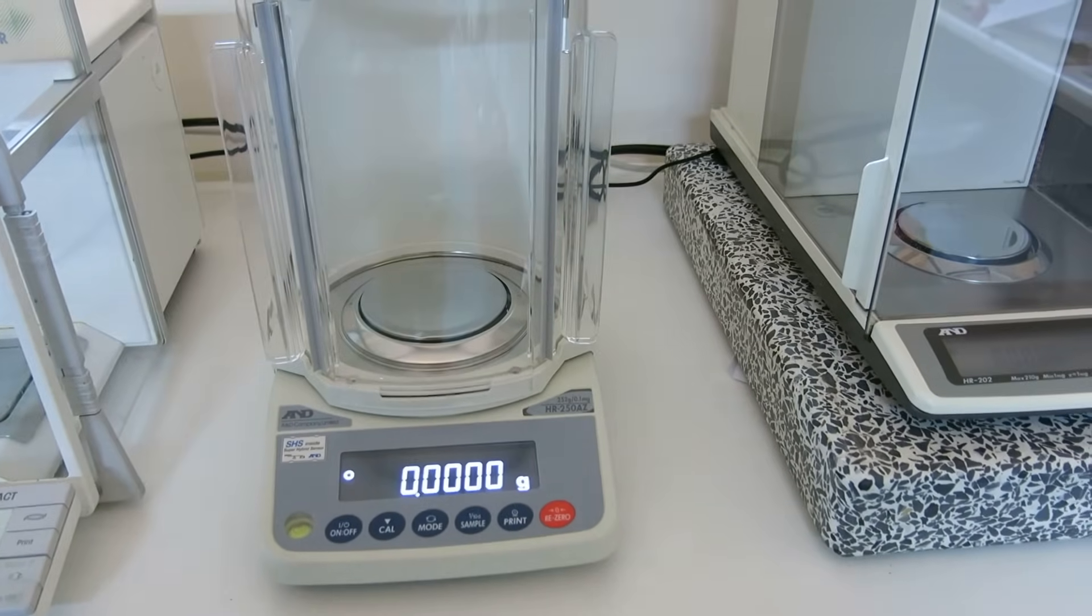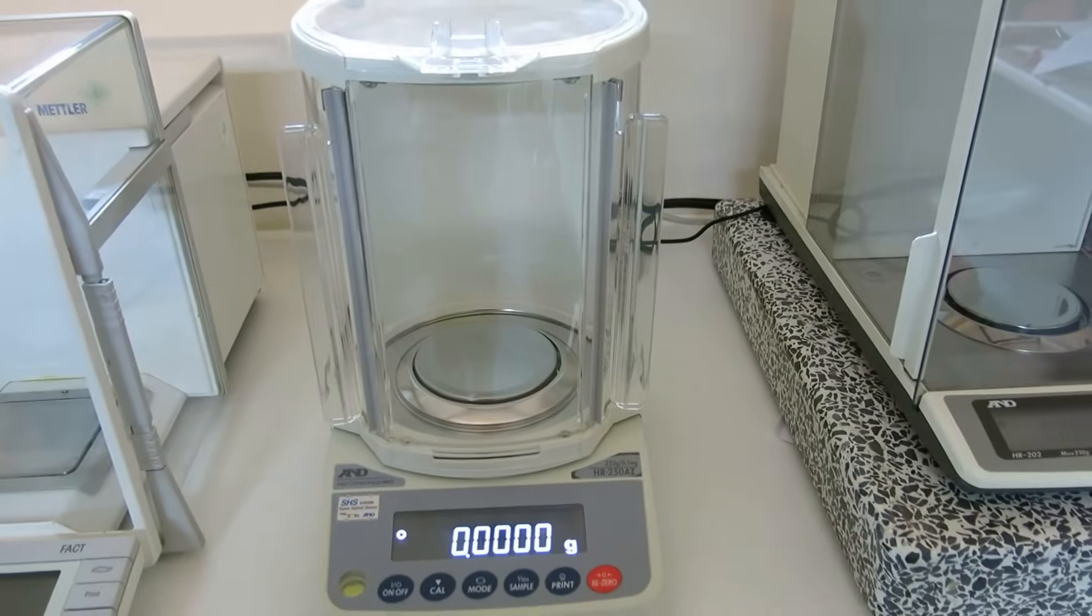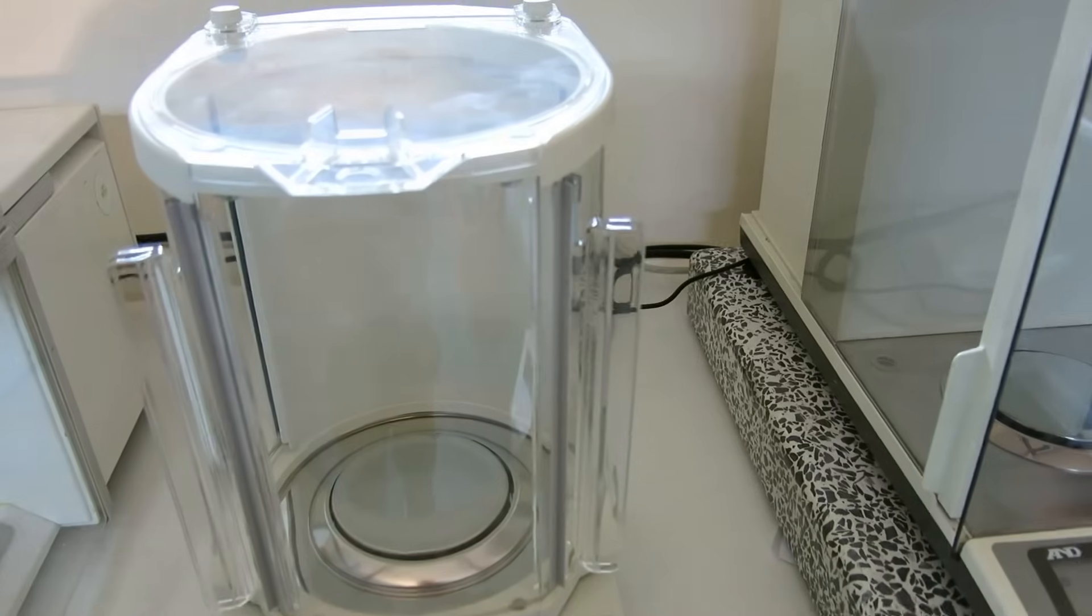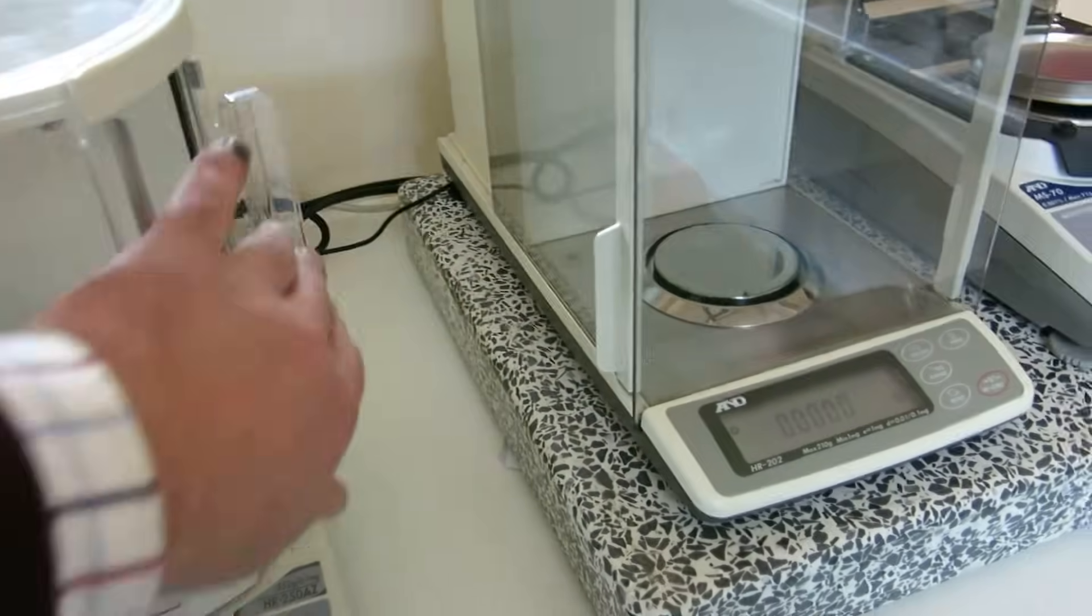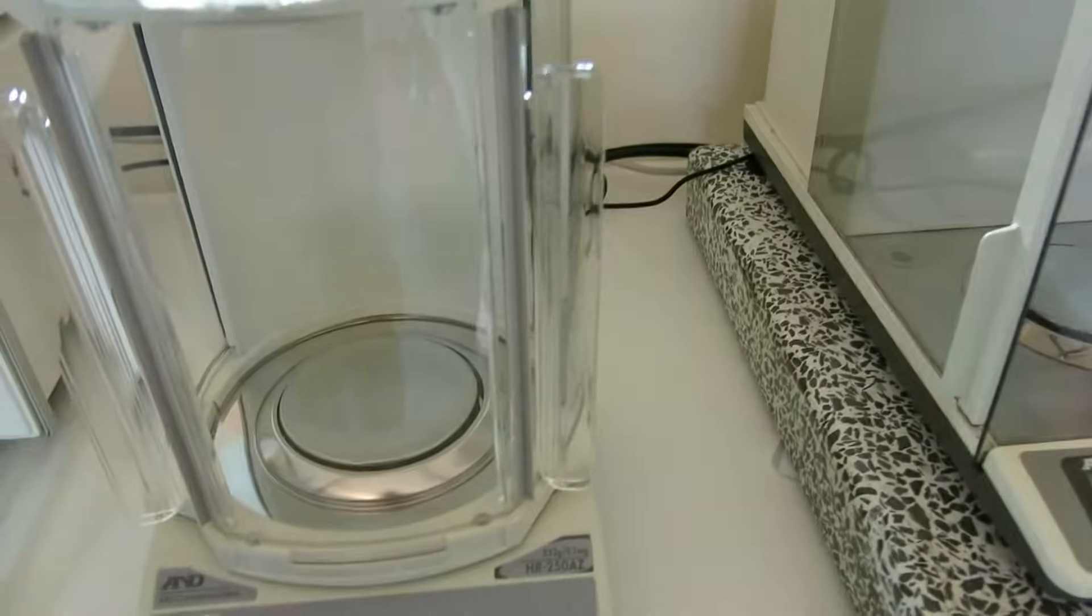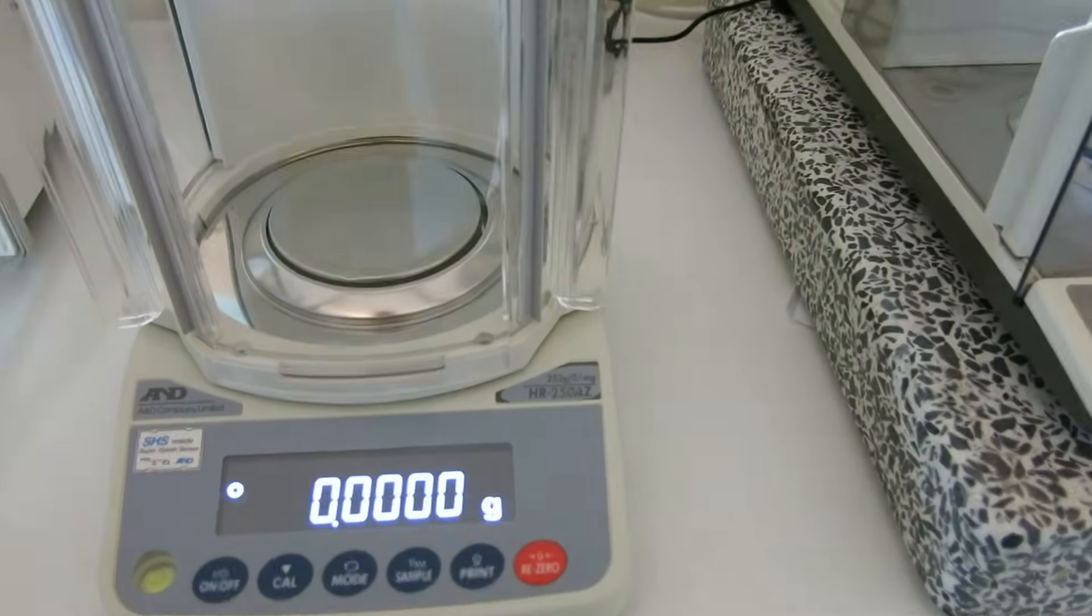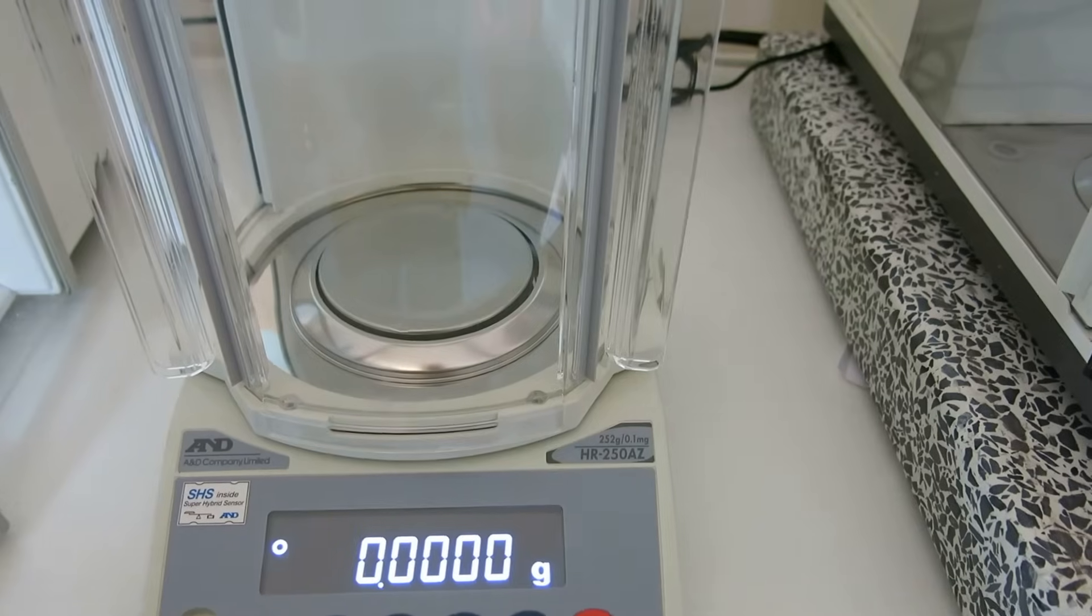We've then got the HR250AZ, which is a new balance. An A&D. It's a really lovely balance. One of my favourites this. It's a very, very robust balance. The beauty with it is it will sit on an A4 piece of paper. It comes with a long warranty. It's got a super hybrid sensor. So it will stabilize in less than a second, which is good news if you're doing a lot of quick weighing or successive weighing rather.